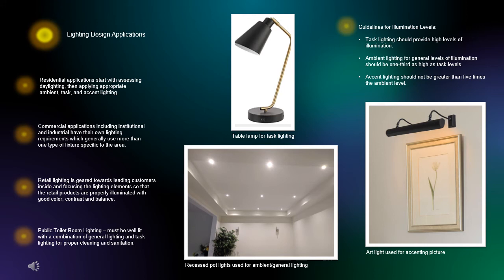For public toilet room lighting, it must be well lit with a combination of general lighting for public use and task lighting for proper cleaning and sanitation. There are guidelines for illumination levels: task lighting should provide high levels of illumination to see the task at hand; ambient lighting for general levels of illumination should be one third as high as task levels; and accent lighting should not be greater than five times the ambient level.